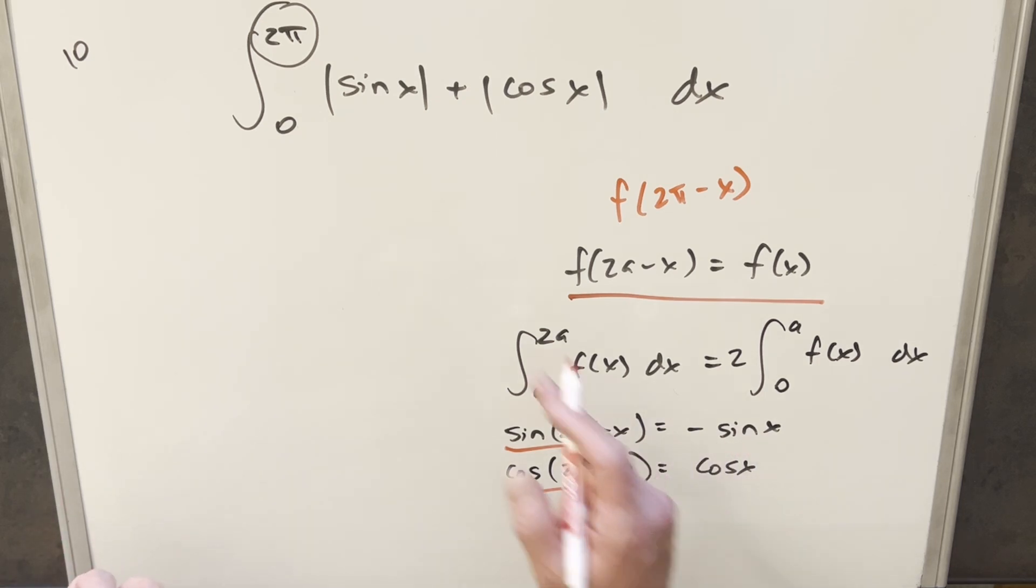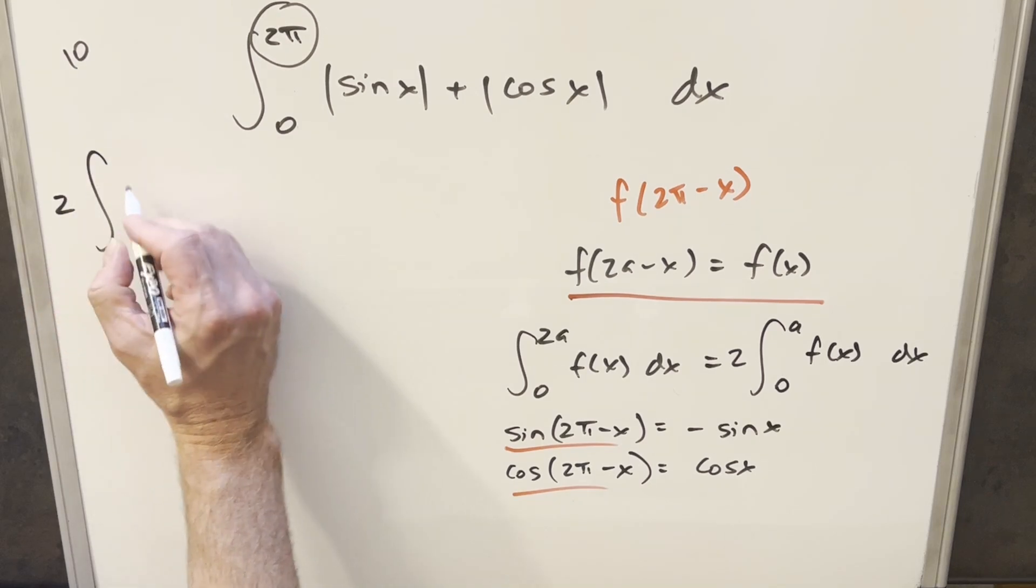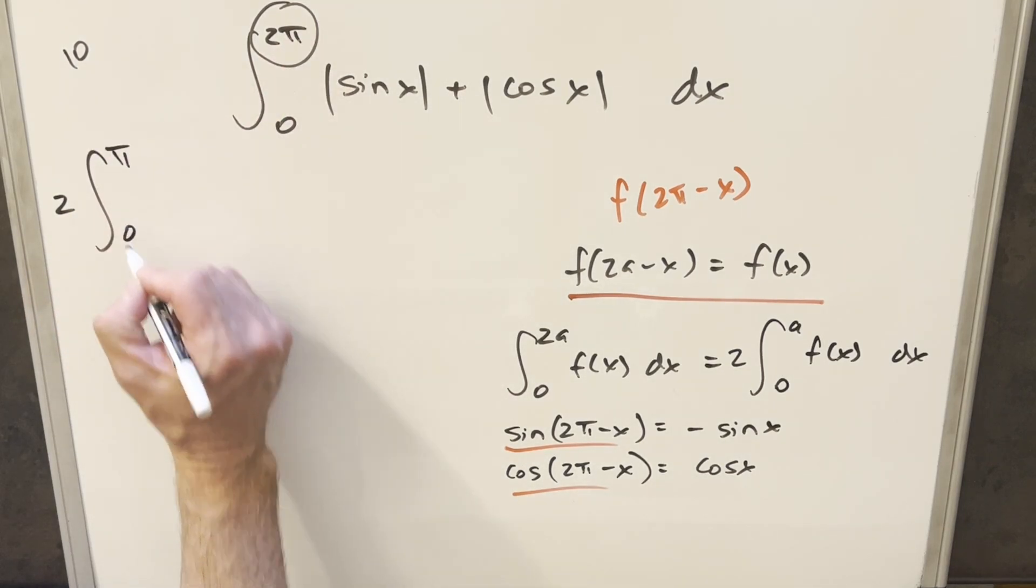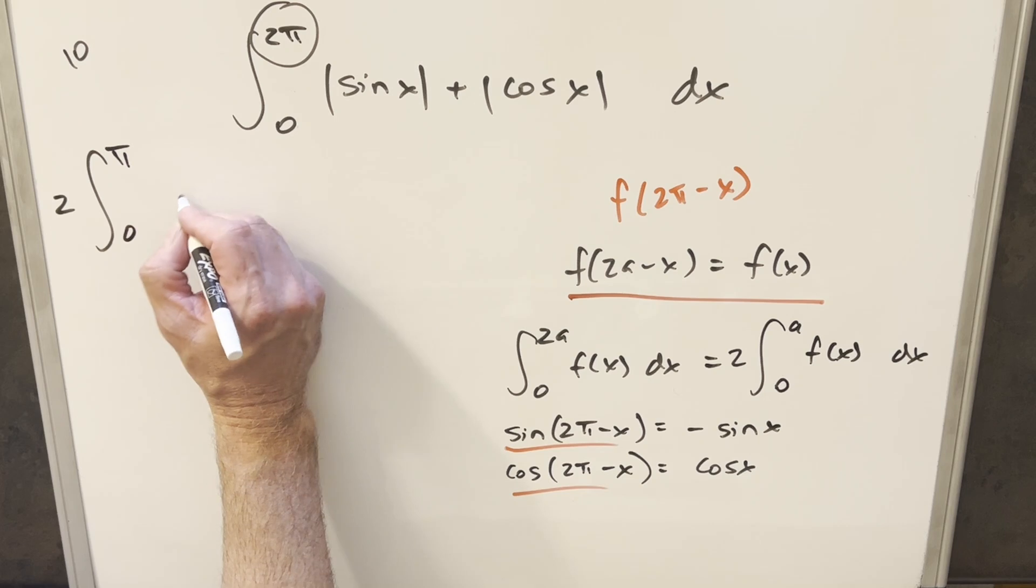And you'll see, you basically just get back the same thing. The absolute value sign is just going to wipe out that minus sign. So clearly what's going to happen, we're going to get back our f of x, and we're allowed to do this. So I can just go ahead and update this, bring a 2 out, reduce this, or cut the bound in half. So now we're going from 0 to π of the same thing here.